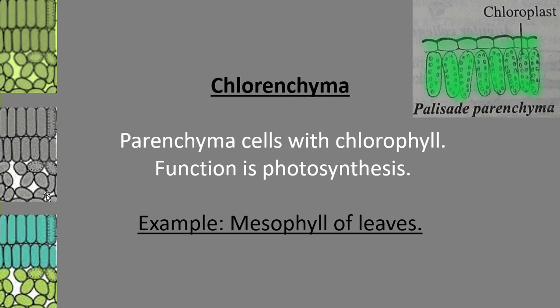Chlorenchyma refers to parenchyma cells that possess chloroplasts — the cell organelle containing the green pigment chlorophyll. These chlorenchyma cells help in photosynthesis to prepare food material. An example of chlorenchyma is the mesophyll region of leaves, which is usually occupied by chloroplasts.